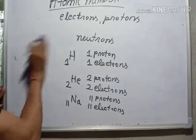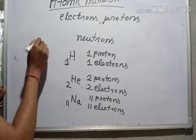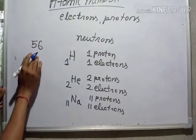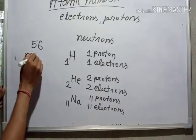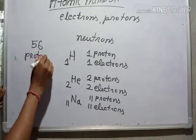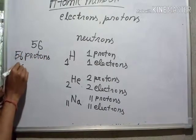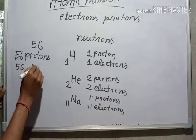If you consider any element which has atomic number 56, then it will have 56 number of protons and 56 number of electrons.